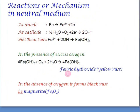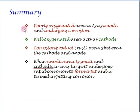Let us now summarize. The poorly oxygenated area acts as anode and undergoes corrosion. Well oxygenated area acts as cathode. Corrosion product occurs between the cathode and the anode. When the anodic area is small and cathodic area is large, it undergoes rapid corrosion to form a pit and it is termed as pitting corrosion.